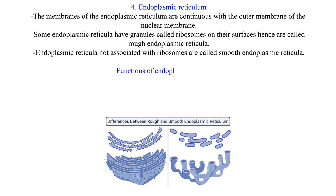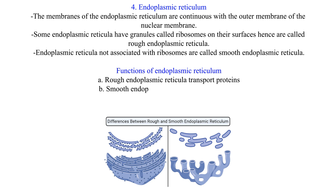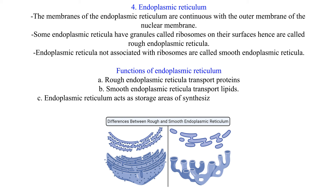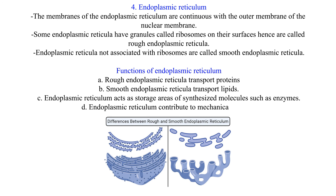Functions of endoplasmic reticulum: Rough endoplasmic reticula transport proteins. Smooth endoplasmic reticula transport lipids. Endoplasmic reticulum acts as storage areas for synthesized molecules such as enzymes. Endoplasmic reticulum contributes to mechanical support.